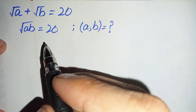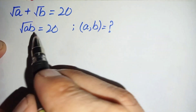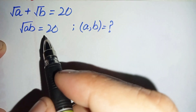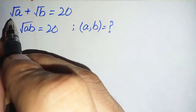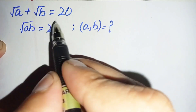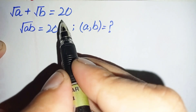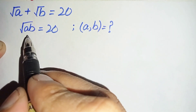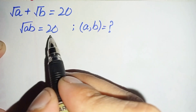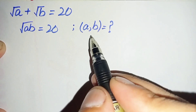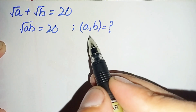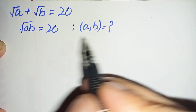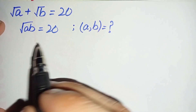Hi everyone, welcome. We will solve this algebra math problem: the square root of a plus square root of b is equal to 20, and square root of a times b is also equal to 20. We will try to find some of the possible solutions to this algebra math problem.